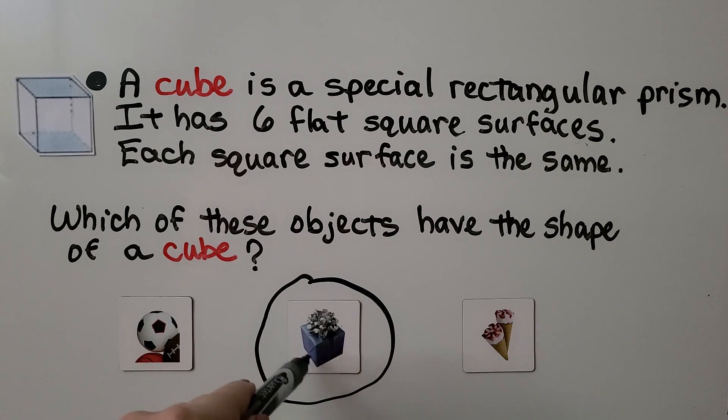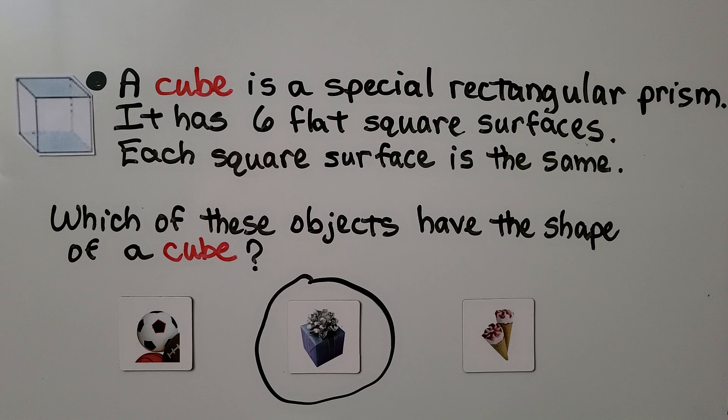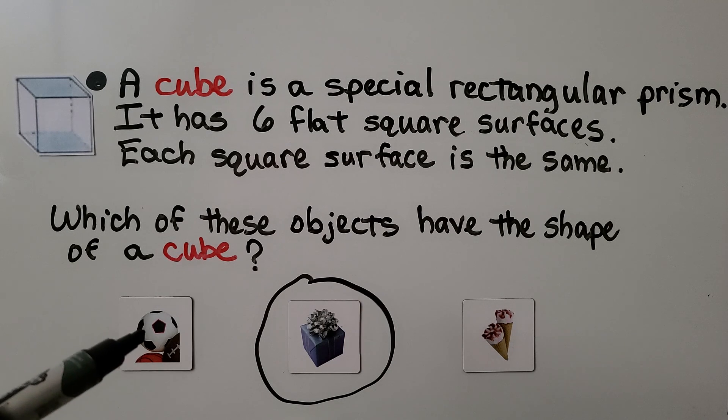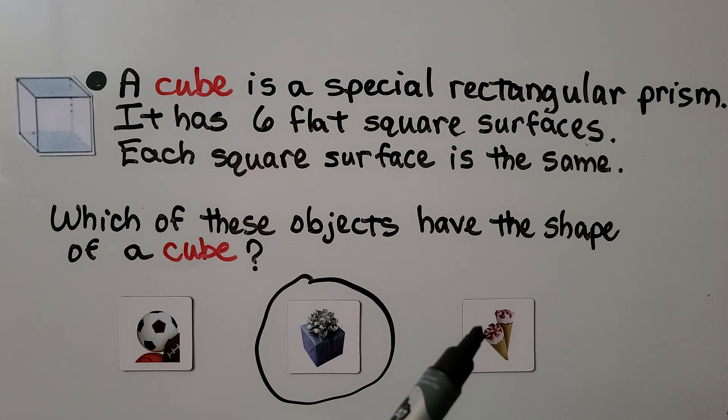We're not counting the ribbon on top. We're just counting the package. That's a cube. A soccer ball, or some call it a football. That's a sphere. And this is an ice cream cone. So that tells us it's a cone.